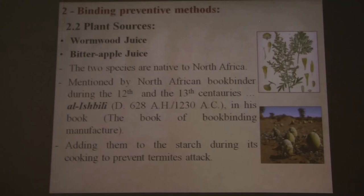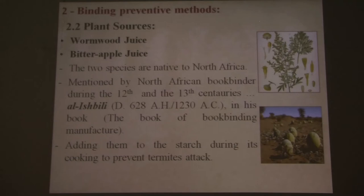For the plant sources, I found these two plants mentioned by a North African bookbinder from the 12th and 13th centuries, someone called Ishvili, who made a book about bookbinding manufacture and gave advice on how to keep documents and books safe. He suggested using the juice of wormwood and bitter apple, adding them to the starch during cooking mainly to prevent termite attacks.